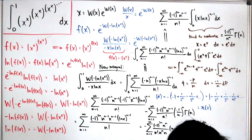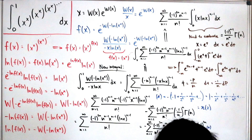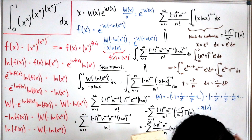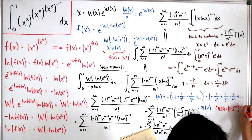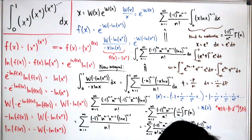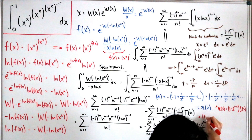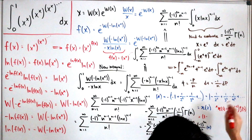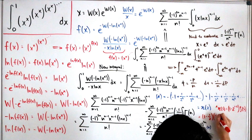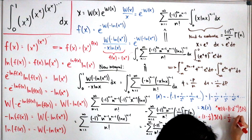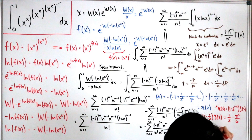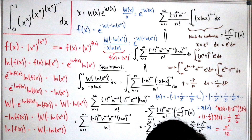Substituting s=2: eta(2) = (1 − 2^(1−2)) times zeta(2) = (1 − 1/2) times zeta(2) = (1/2) times zeta(2). Since zeta(2) = π²/6 by Basel's problem, we get (1/2)(π²/6) = π²/12. Therefore the final answer is π²/12.